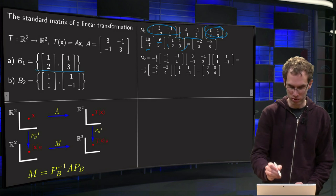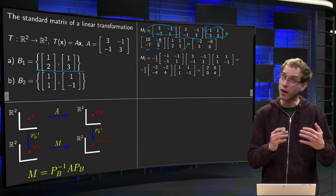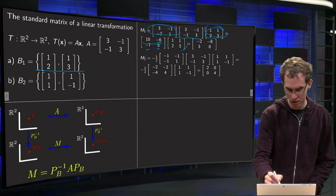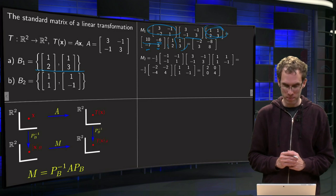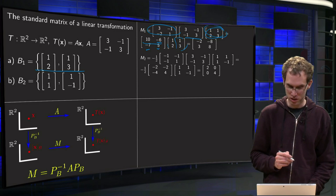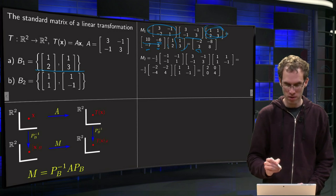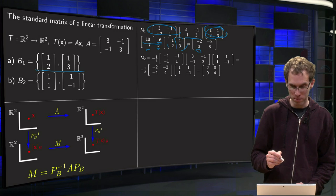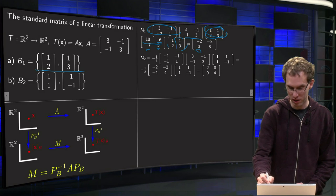And now our second product, again with the row column rule, is 10 minus 12 equals minus 2, and then minus 7 plus 10 equals 3, the first column. And then 10 minus 18 equals minus 8 and minus 7 plus 15 equals 8 over here.